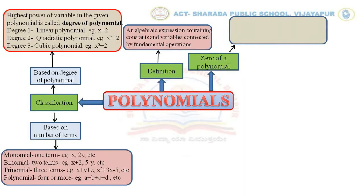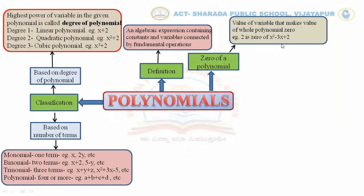Next, we discussed the zero of a polynomial. It is the value of the variable that makes the value of the whole polynomial equal to zero. For example, for the polynomial x squared minus 3x plus 2, when we replace x with 2, the whole polynomial becomes 0. That is why 2 is called the zero of the polynomial x squared minus 3x plus 2.